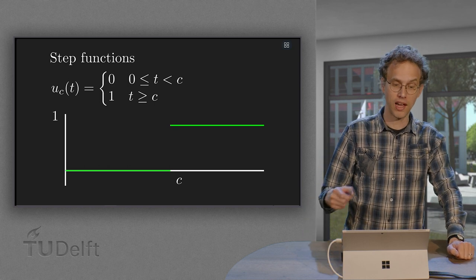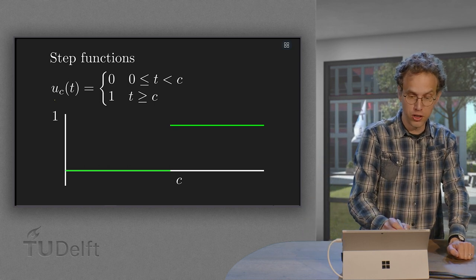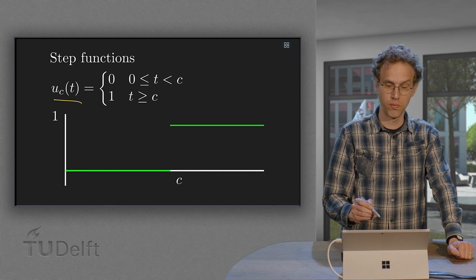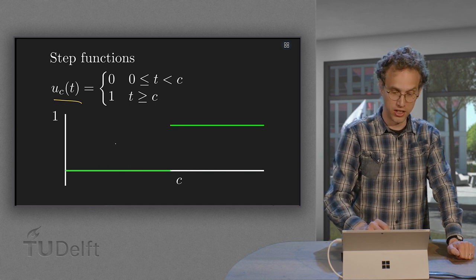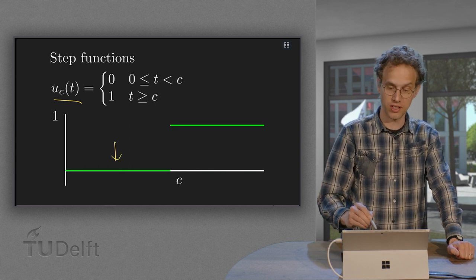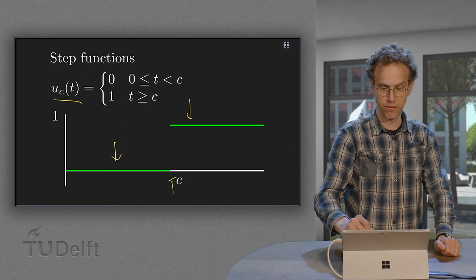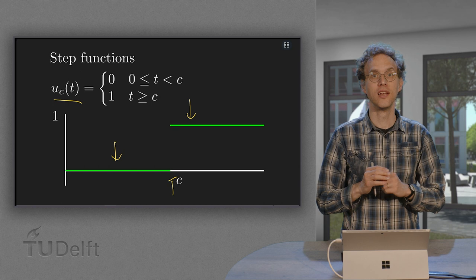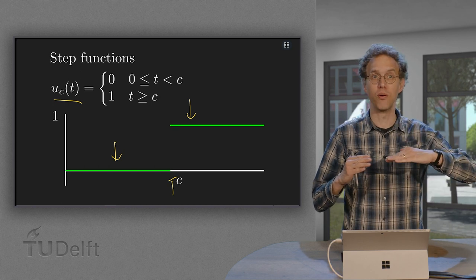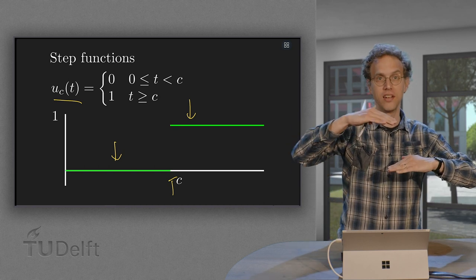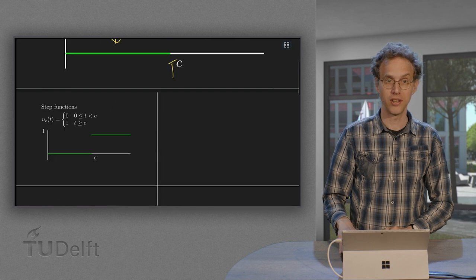So how do they look like? We call them uc of t. What does this mean? We are 0 until time c and then we jump to 1. So the function uc of t is by definition 0 up till c and then jumping up to 1. So that's it.